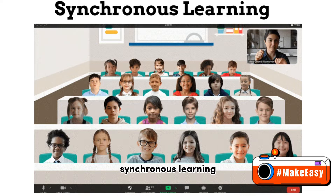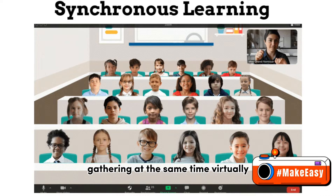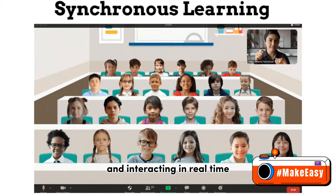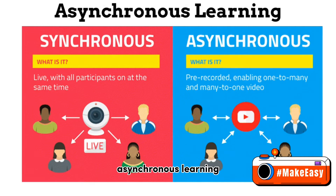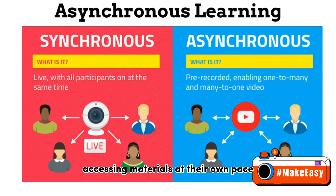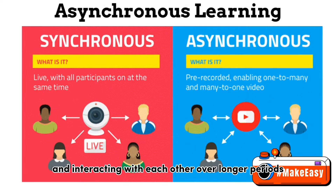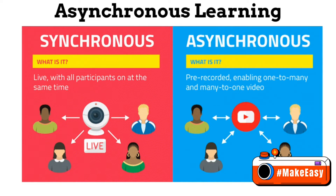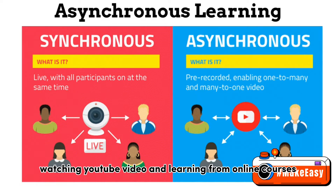There are two types of e-learning. Number 1: Synchronous learning — this refers to instructors and students gathering at the same time virtually and interacting in real time. Example: Zoom online classes. Number 2: Asynchronous learning — students access materials at their own pace and interact with each other over longer periods, not in real time. Example: watching YouTube videos and learning from online courses.